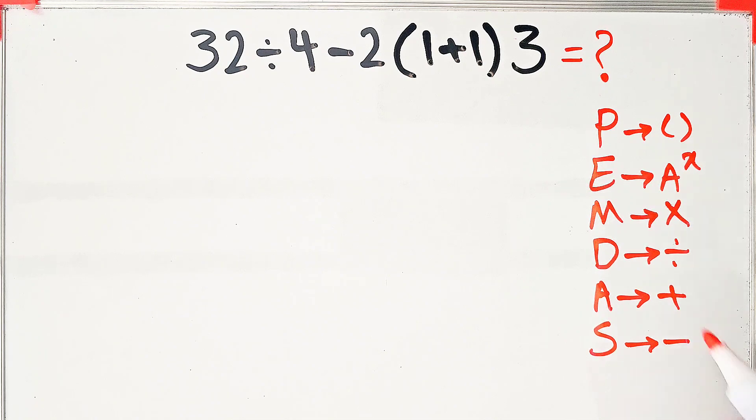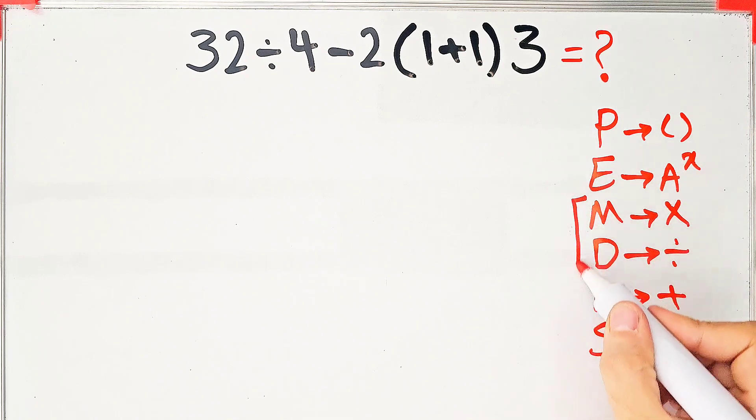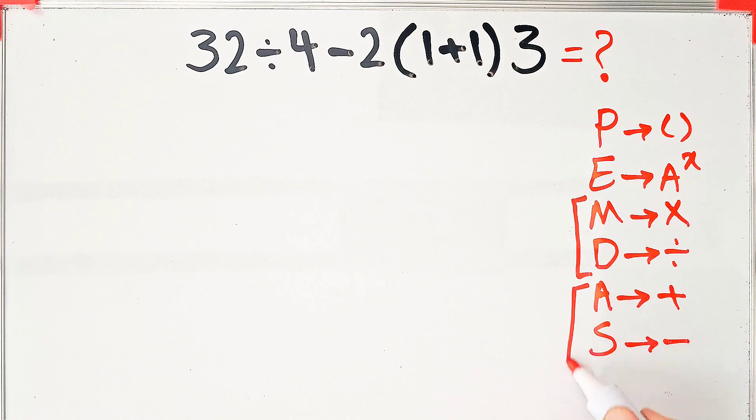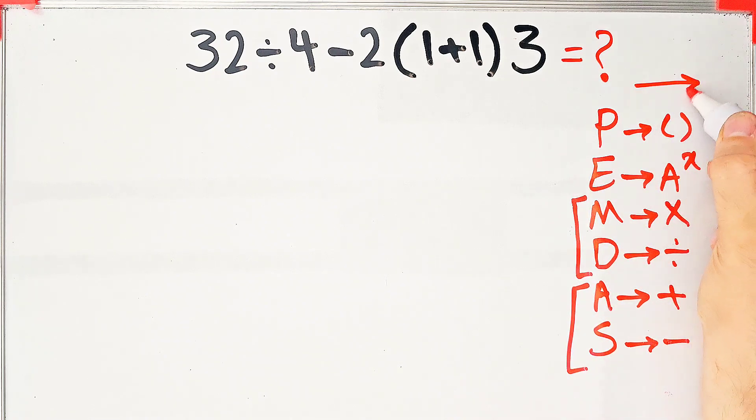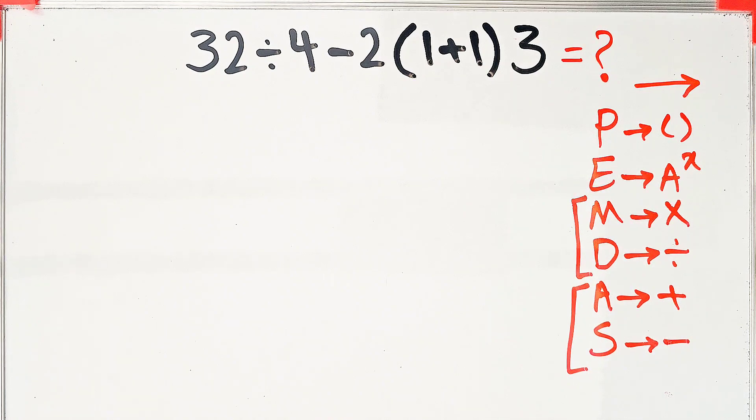Multiplication and division have the same level of priority. Also, addition and subtraction have the same level of priority. When we have both in an expression, we start from the left and simplify the question. According to this rule,